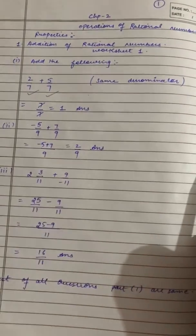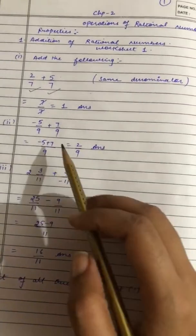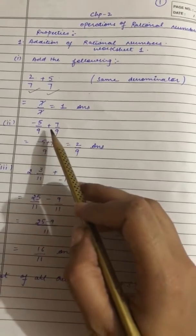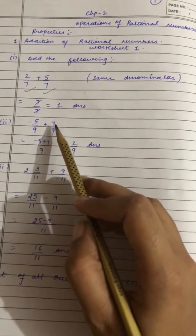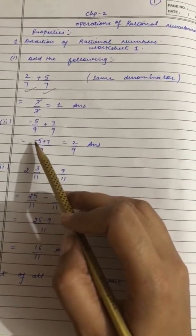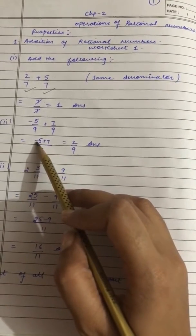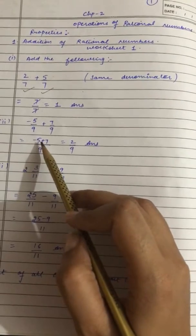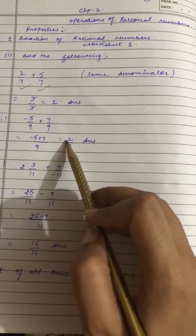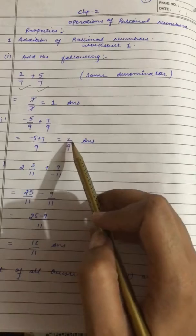What is the denominator here? Again denominator is the same. So, simply add the numerators. But here you have minus 5 plus 7. So, we will subtract because plus minus is minus. Here we have 2 by 9.